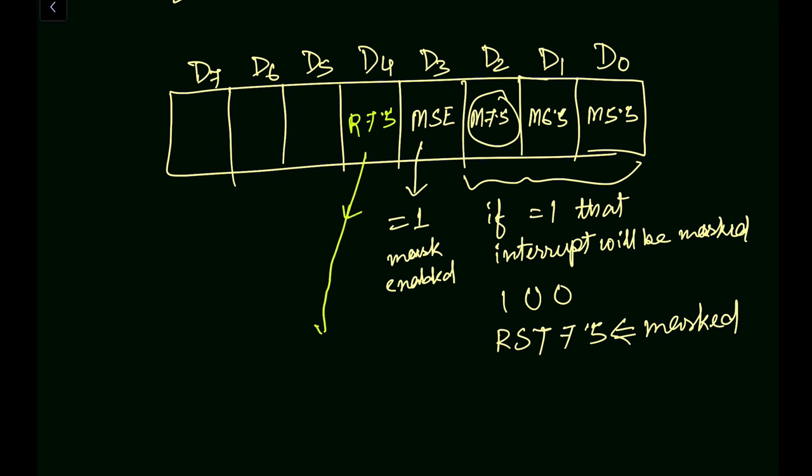So let me write down here. If equal to 1, what will happen? RST 7.5 will be reset. This value will be reset. Reset means it will be cleared or it will be 0.